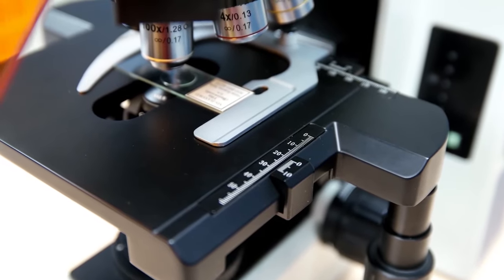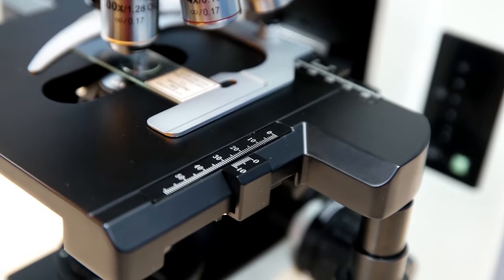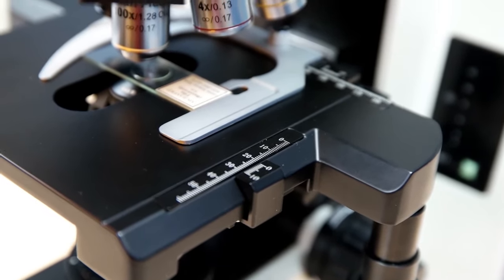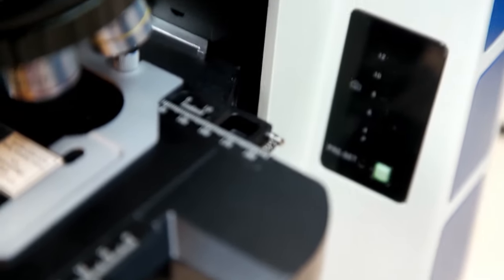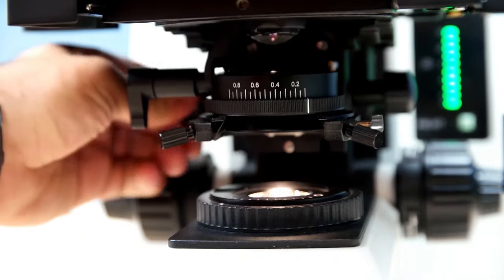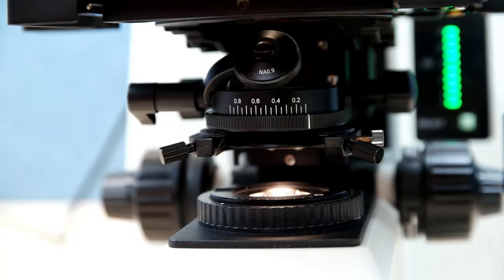It has a ruler for both X and Y direction and moves up to 55mm in Y direction and 186mm in X or horizontal direction. It uses a swing out condenser with a numerical aperture of 0.9.